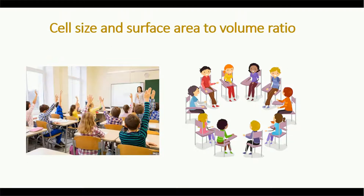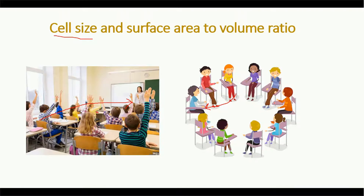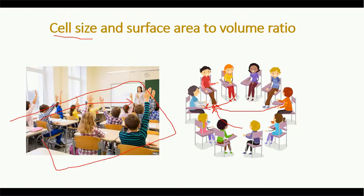For example, consider two classrooms. In one, the teacher is at one end while students are arranged in lines. In another, students are arranged in a circular way. A student far from the teacher in the linear classroom takes a long time to reach the teacher, while in the circular classroom the student can easily access the teacher. In cell terms, a larger surface area to volume ratio means easy access to nutrients and easy removal of waste.